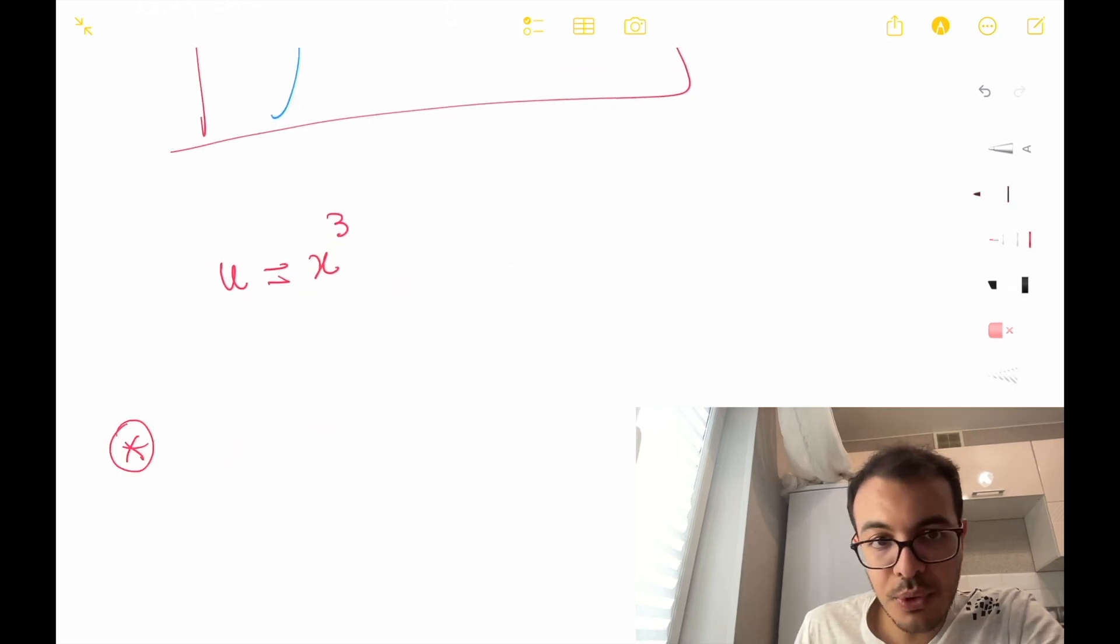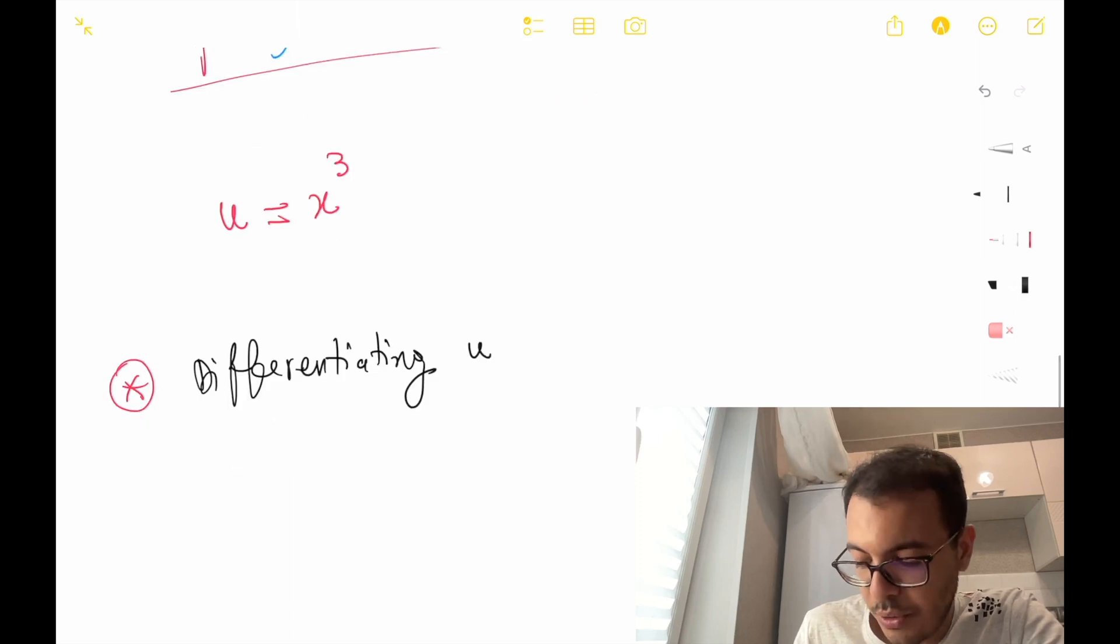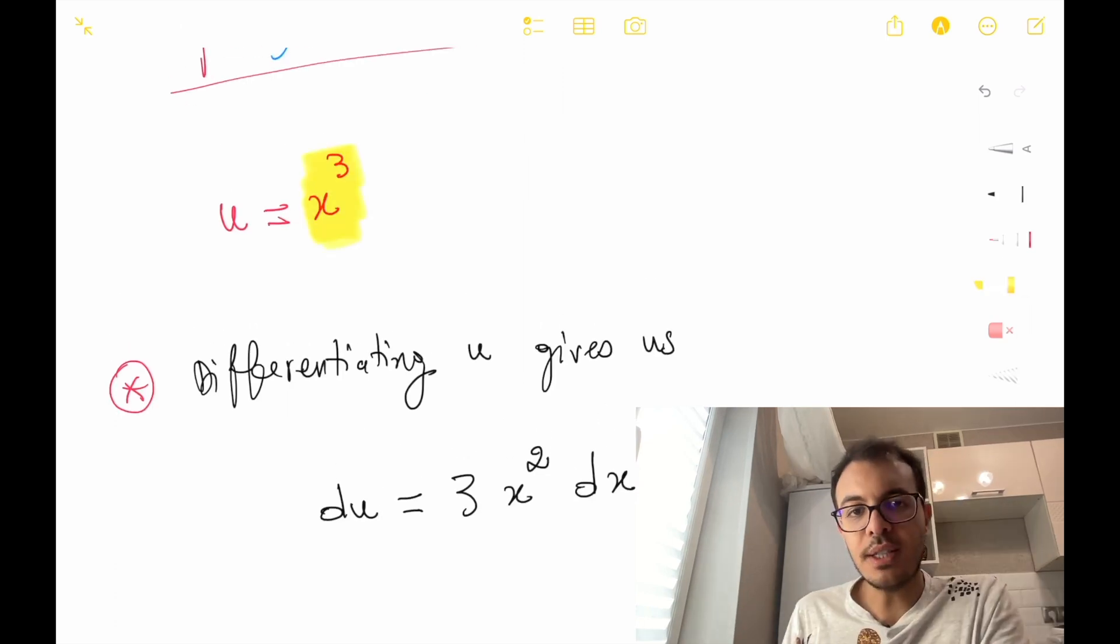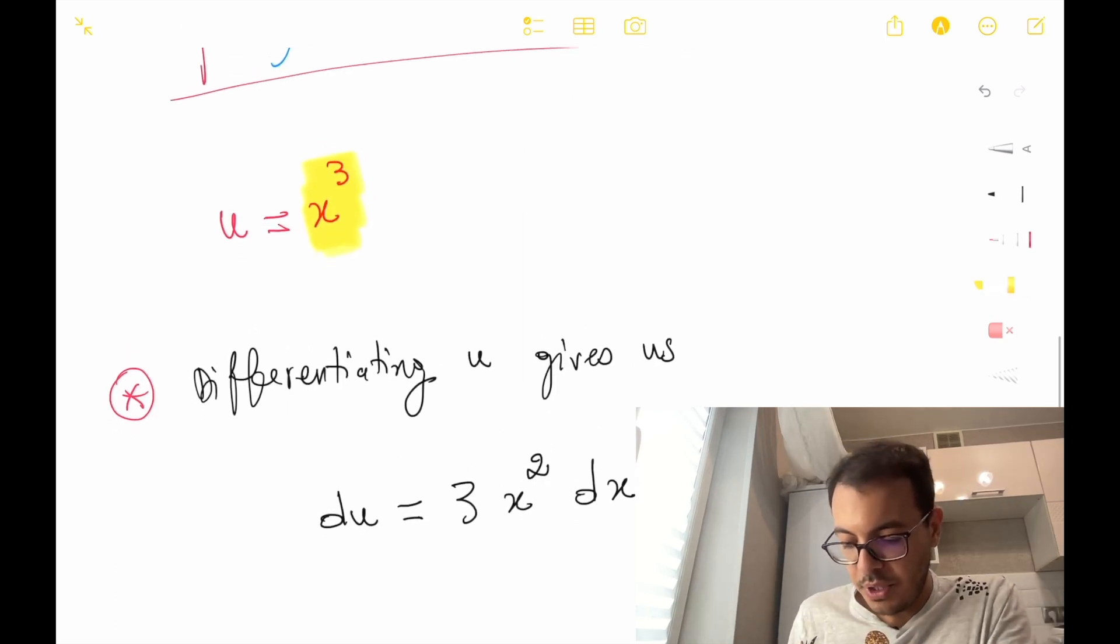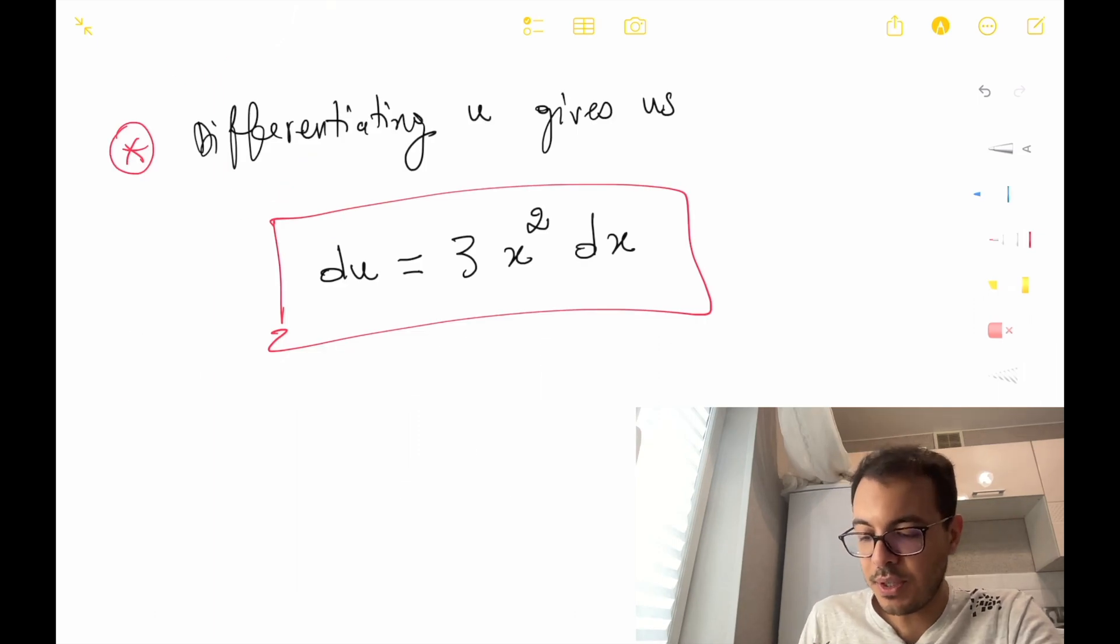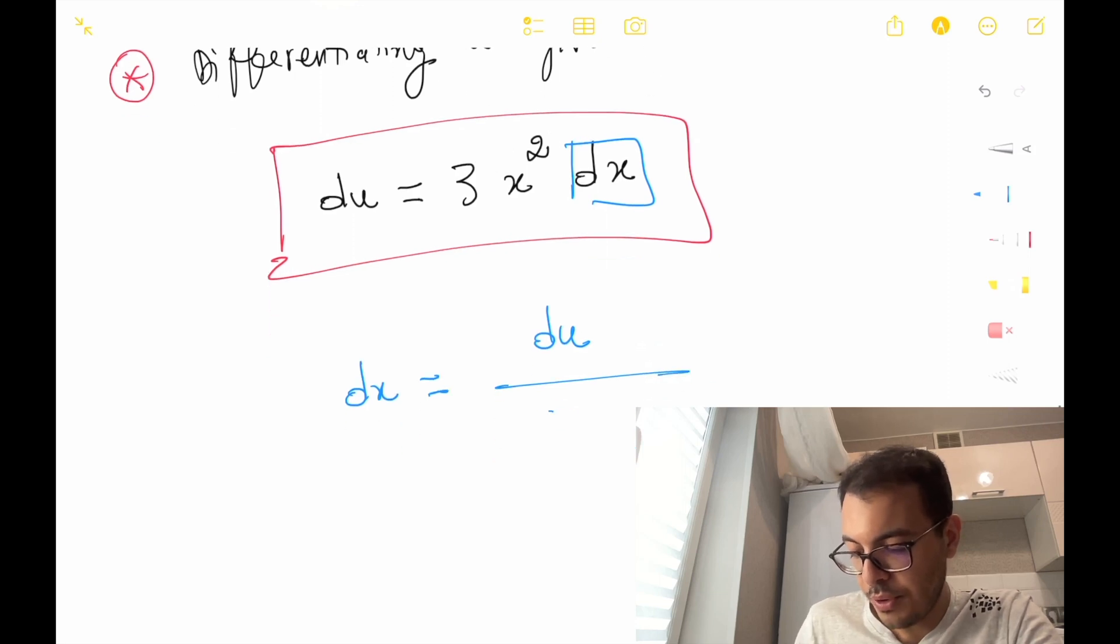First, we have to differentiate. Differentiating u gives us du equals 3 times x squared dx. Here I just calculated the derivative of x cubed. We can notice that dx is actually du over 3x squared.